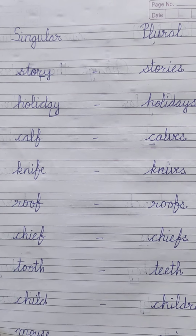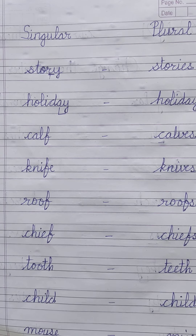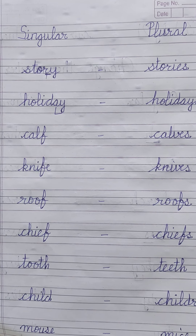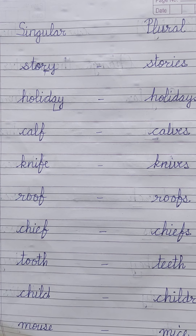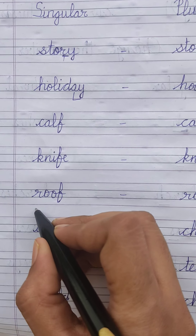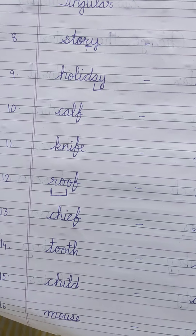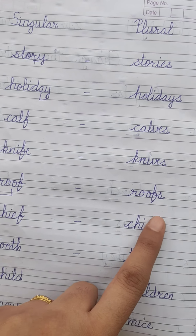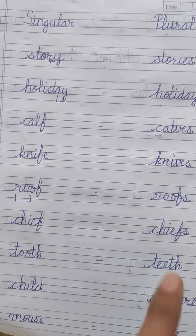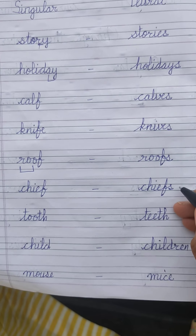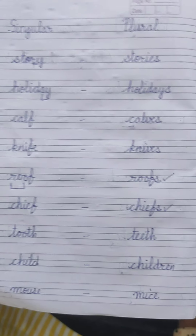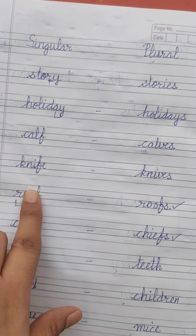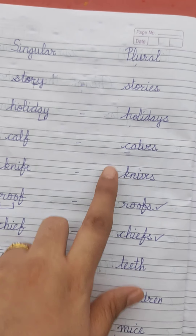However, 'roof' is a special case — it has double 'o' before 'f,' and we do not change 'f' to 'ves.' This is an exception. There are always certain rules applied differently. So roof → roofs. Similarly, chief → chiefs. In these two words we simply add 's.' Otherwise, we change 'f' to 'ves,' as in knives and calves.